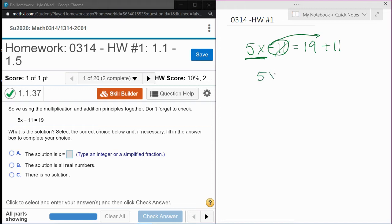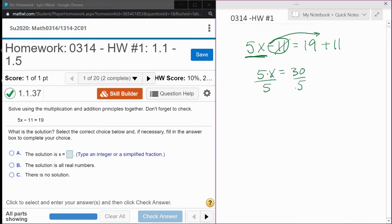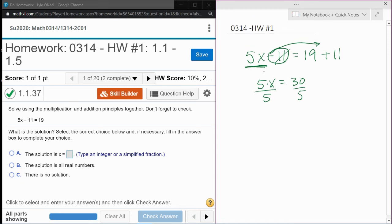We're going to have 5x equals 19 plus 11. That is 30. And then to get rid of the 5, since it's multiplied, we have to do the opposite operation, which is divide.